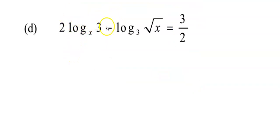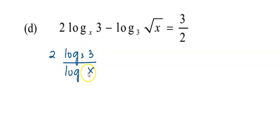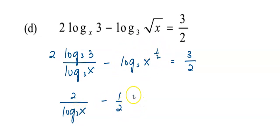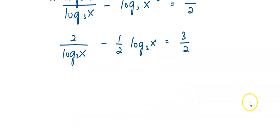This is the last example in this video. We use a similar approach. Again, changing the base into base 3. I have log base 3 of 3 over log base 3 of x minus log base 3 of x to the power of 1 over 2, and this equals 3 over 2. Slightly adjusting, I get 2 over log base 3 of x minus 1 over 2 log base 3 of x equals 3 over 2, applying the laws of logarithms.